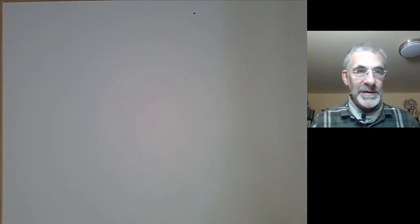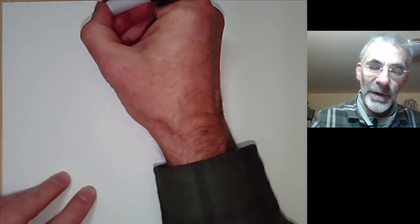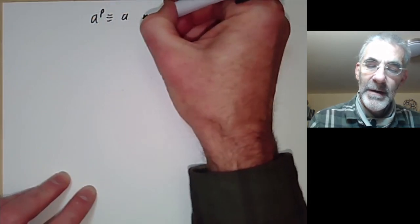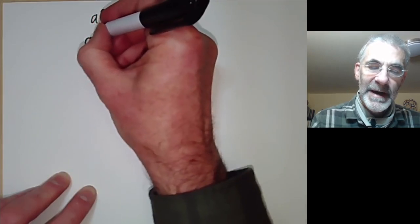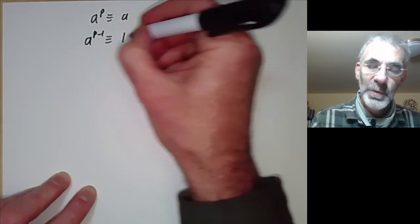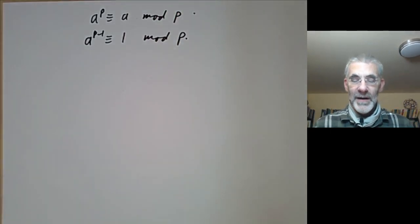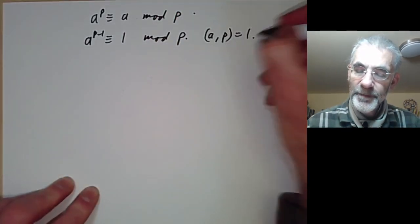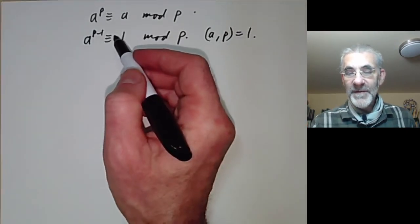There's an alternative version of Fermat's theorem. One version says a to the p is congruent to a mod p; the other version says a to the p-minus-one is congruent to 1 mod p, provided a and p are co-prime.